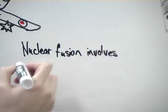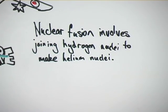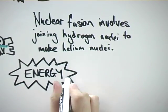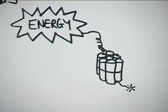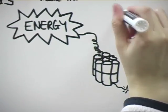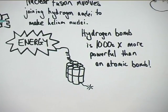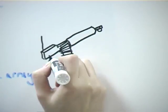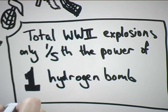The process of nuclear fusion involves joining hydrogen nuclei together to form an end result of a helium nucleus. This process involves the release of a huge amount of energy, so it can be very destructive. A hydrogen bomb is thousands of times more powerful than an atomic bomb. The total number of explosions in World War II was only one-fifth of the power of one hydrogen bomb.